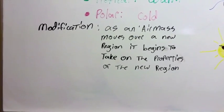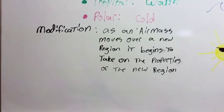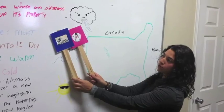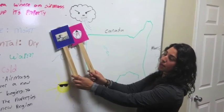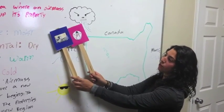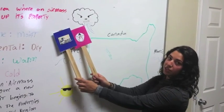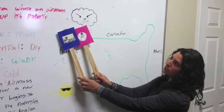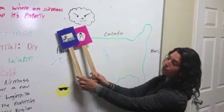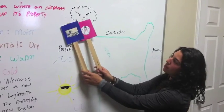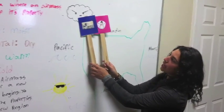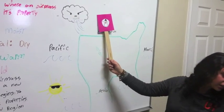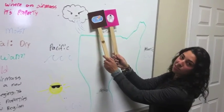Modification is when an air mass moves over a new region and it begins to take on the properties of that new region. We have an air mass that is maritime polar over in the northwest region. Due to modification, the air mass is going to take up the temperature and moisture of the region it moves over. As this air mass moves along and comes over land, no longer over the ocean, it is going to change from maritime polar to continental polar.